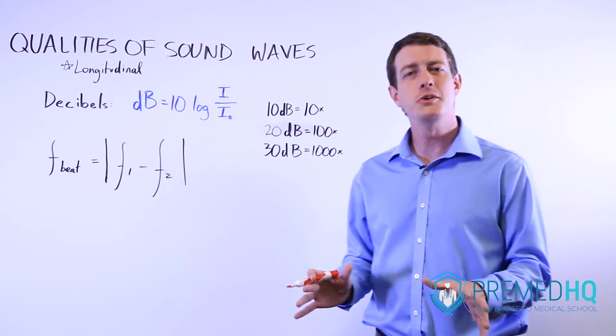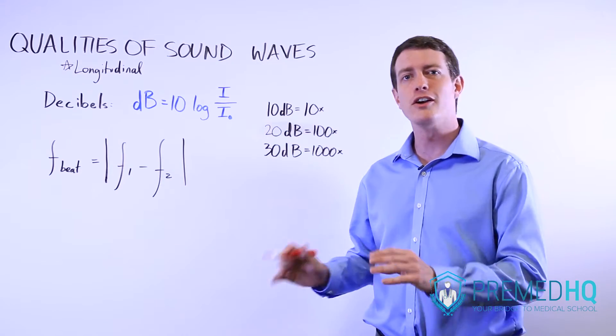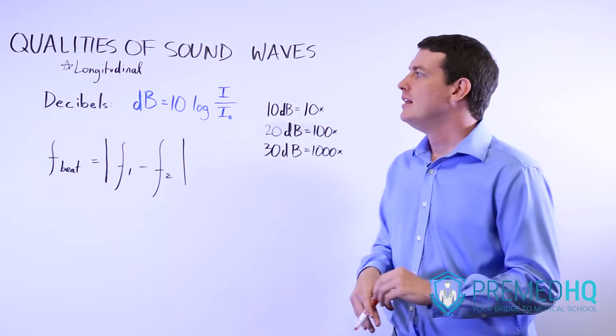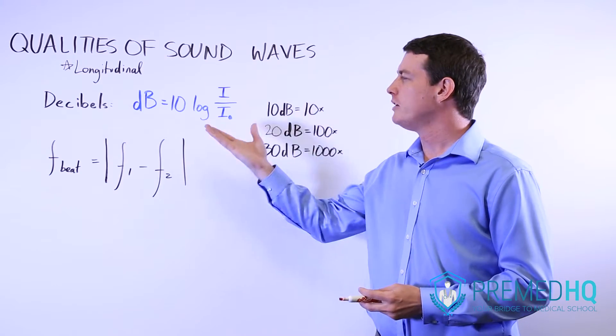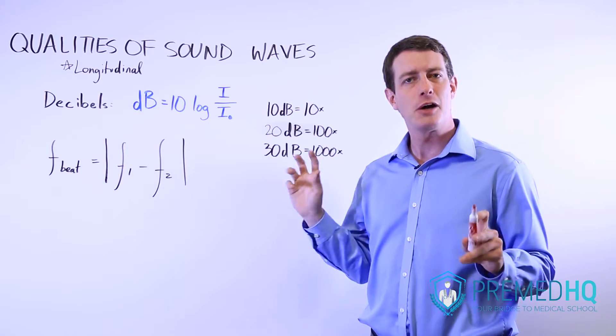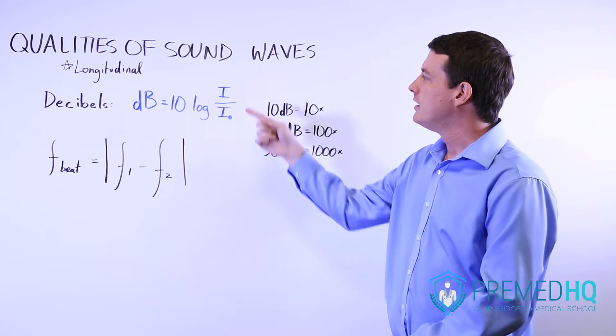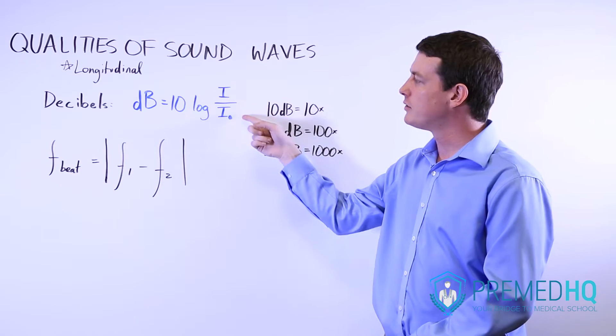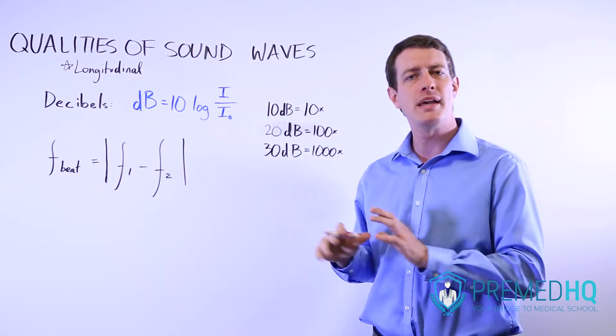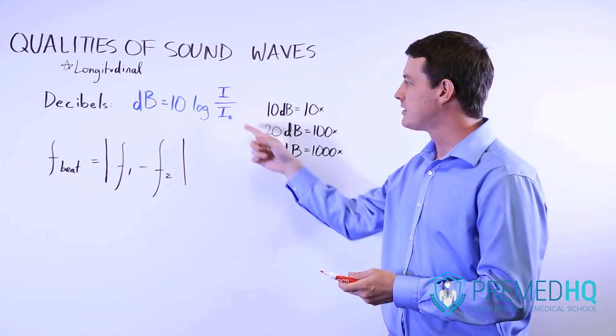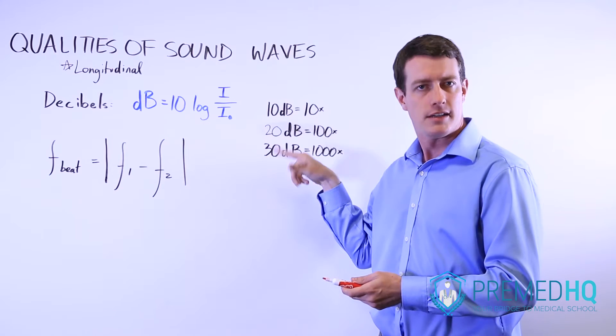Decibels and beats are two unique qualities of sound waves that are not shared with light waves. A decibel is a measure of the loudness of a sound, and decibels are measured by comparing the intensity of the sound to some reference or baseline intensity, which is usually depicted as I naught.